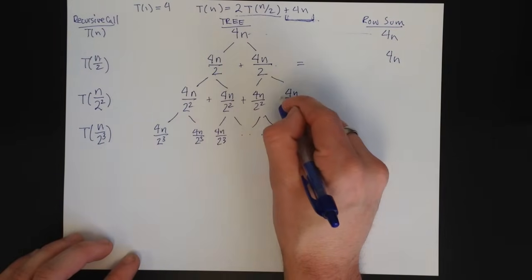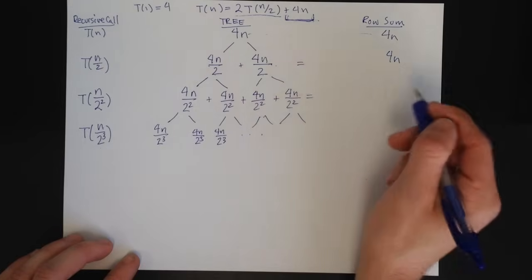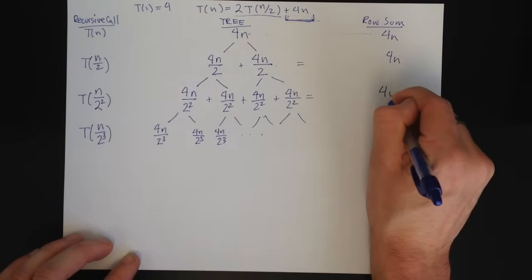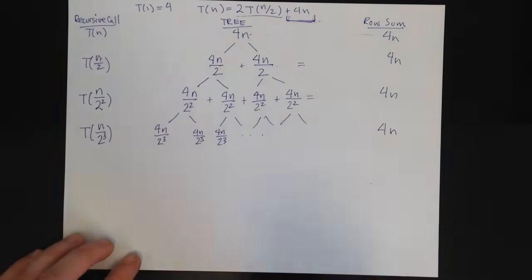This is 4n/2^2 plus 4n/2^2 plus 4n/2^2. So that equals, you'll notice this is four. There are four of them. So I get 4n. And this pattern continues. Every row I get 4n.